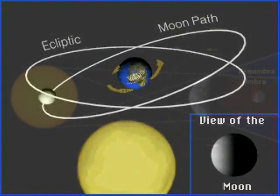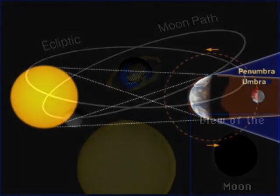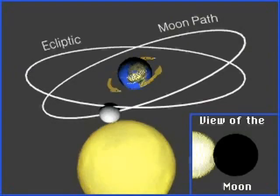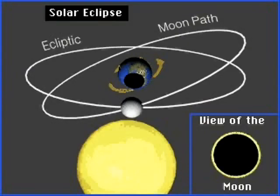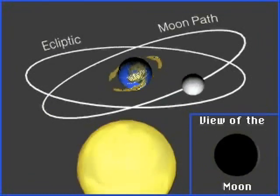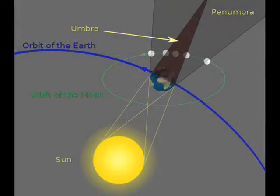The shadow of the Earth has two parts: the ombra and the penumbra. The ombra is the region of total shadow, which means that if you were inside this region, you would not see any portion of the Sun. If you moved and saw a small part of the Sun around the edge of the Earth, then you must be in the penumbra.